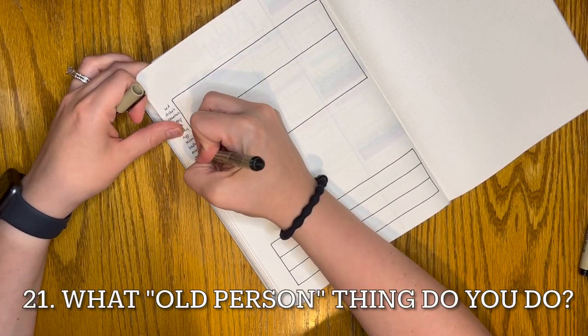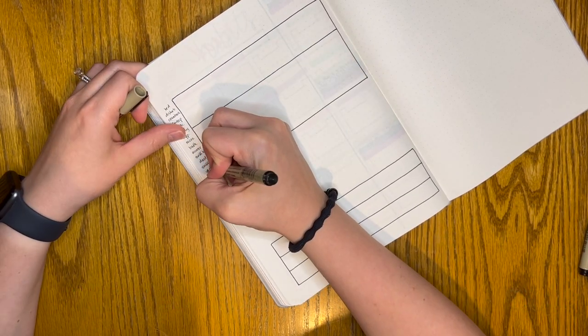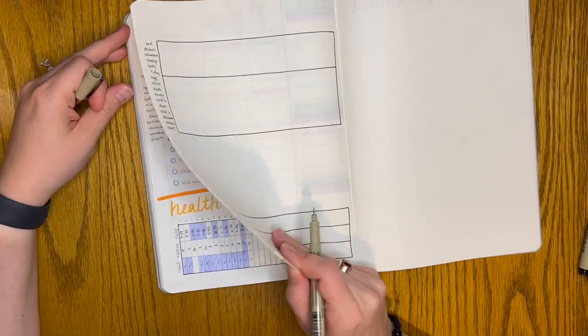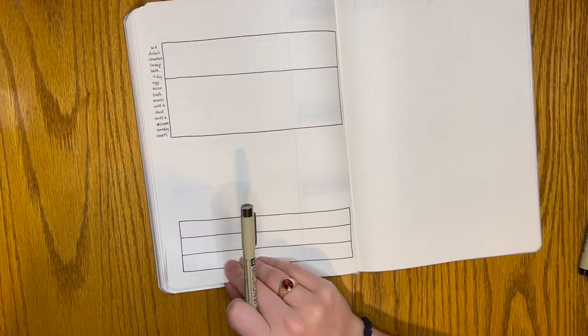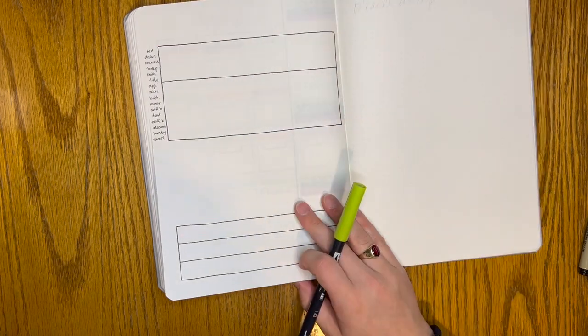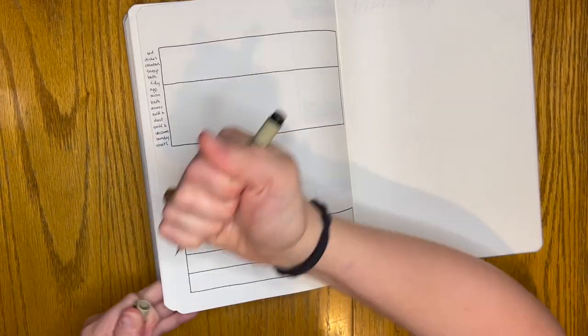Question number twenty-one, what old person thing do you do? I think my best answer is that I go to bed early and wake up early. I turn into a pumpkin, really, if I'm not in bed before eleven, but I shoot for ten every night. Sometimes I'm in bed at nine, sometimes earlier. It depends. And then I try to wake up around five or five thirty to walk the dogs before the kids get up.